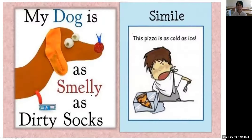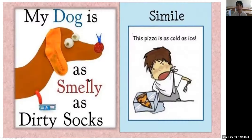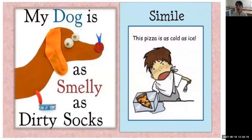'My dog is as smelly as dirty socks.' Here we can see the simile. How can we identify it? The linking element is 'as...as.' We see these conjunctions which help create the simile. The next one: 'This pizza is as cold as ice.' Here the linking element is again 'as...as.' So these are examples of simile.